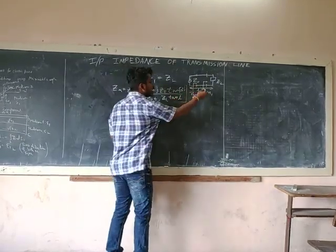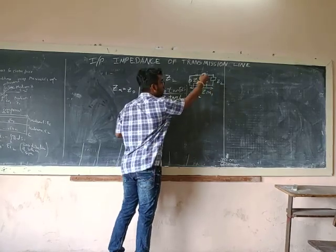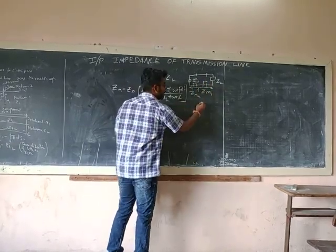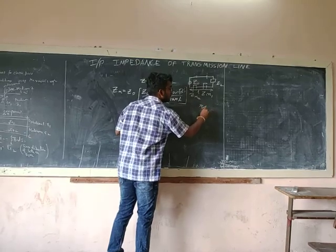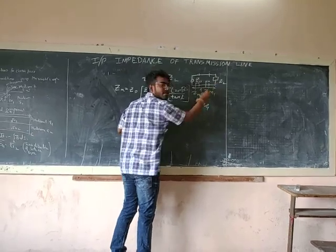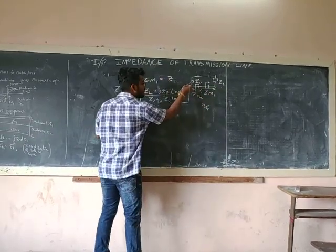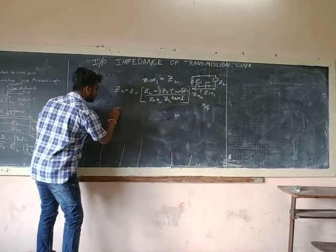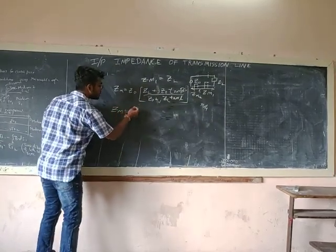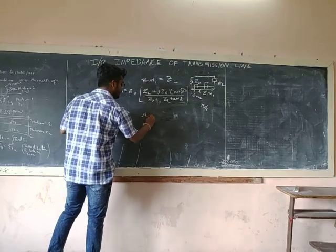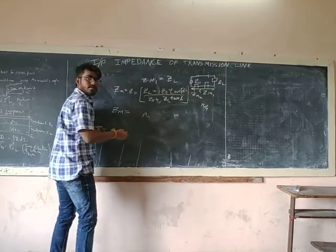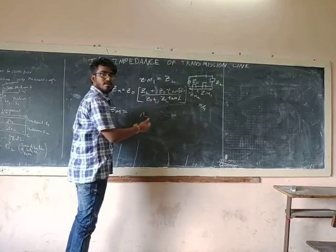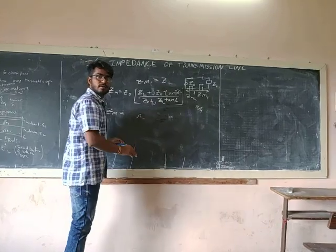I can substitute any length from any point. Let's assume this as pi by 4 from this point. So, we can substitute pi by 4 over here, and we can find our impedance in ohms or anything by substituting L. Thank you.